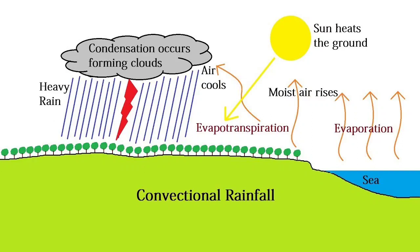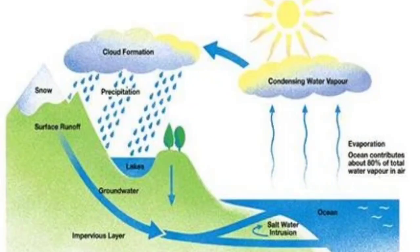As a result, the hot and humid air rises, expands, and cools down as it ascends in the atmosphere. This leads to the condensation of water particles — that is, the conversion of water vapor into water droplets — which ultimately leads to the formation of clouds and subsequent rainfall.